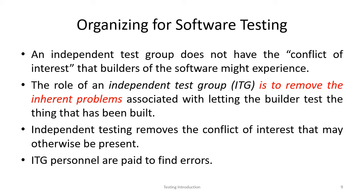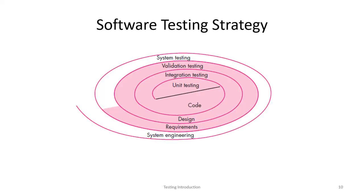The independent test group personnel are paid to find errors — so they will definitely try to find errors. The software testing strategy is organized as: first coding, then unit testing, then integration testing, then validation testing to ensure requirements are satisfied, and finally system engineering tasks.